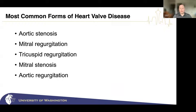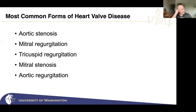By and large, valve problems are one of those two types — narrowed or leaky — though some valves can have both. The most common forms include aortic stenosis, mitral regurgitation (leaky mitral valve), tricuspid regurgitation (leaky tricuspid valve), and less commonly mitral stenosis and aortic regurgitation. Pulmonic valve issues tend to be things you're born with, slightly different from conditions that are acquired over time.